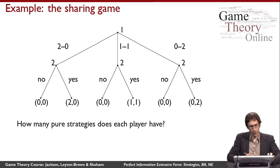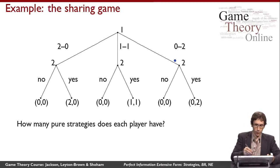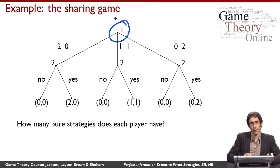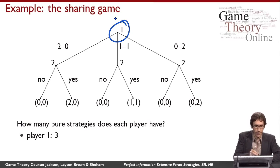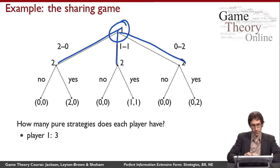We'll start by thinking about player one. Player one is kind of easy because there's only one choice node for player one here, and so player one has the three pure strategies that you would expect: taking this action, this action, and this action.